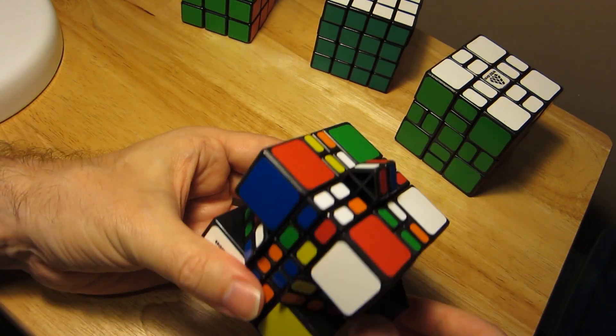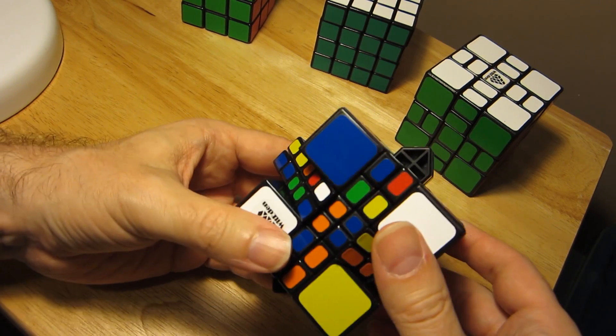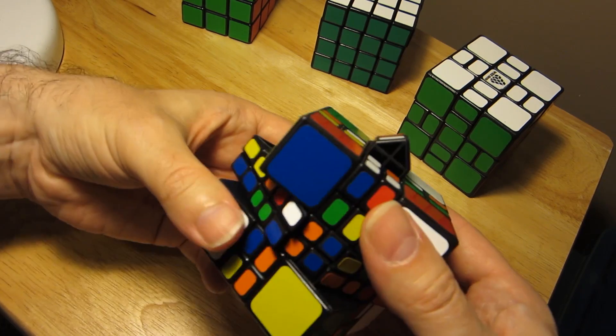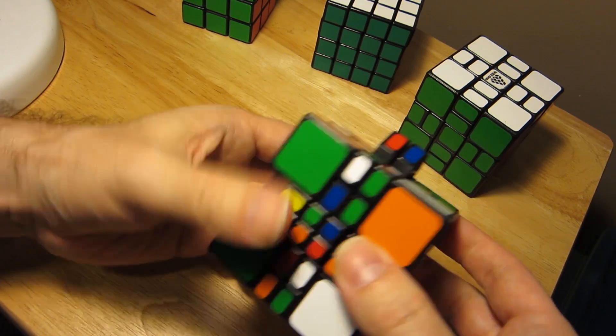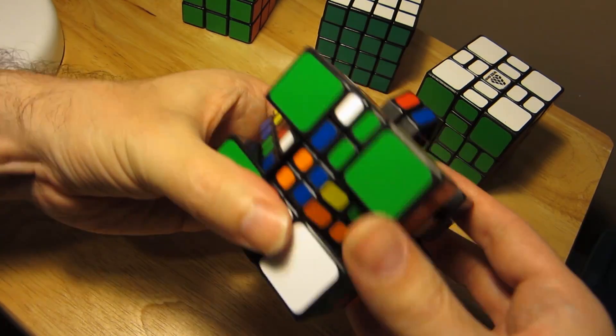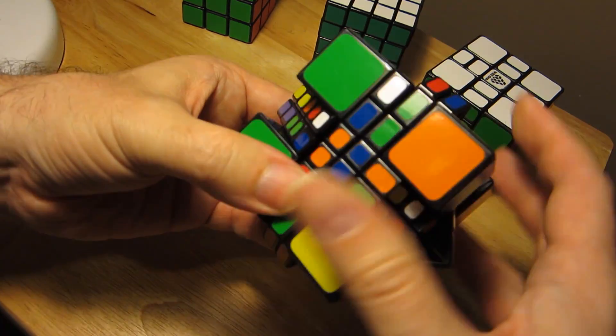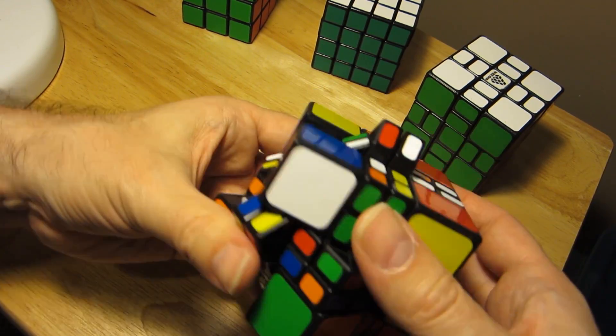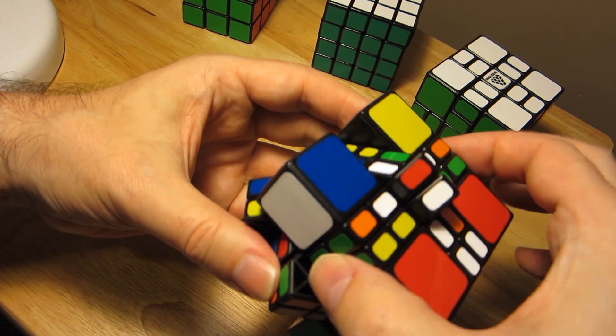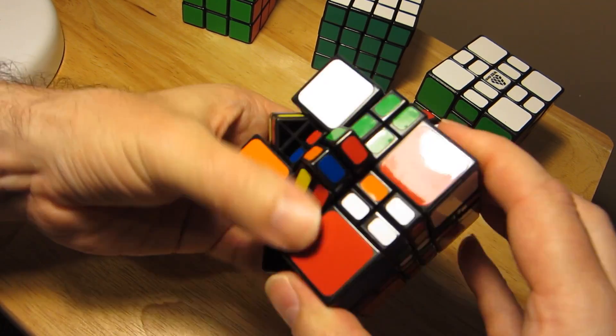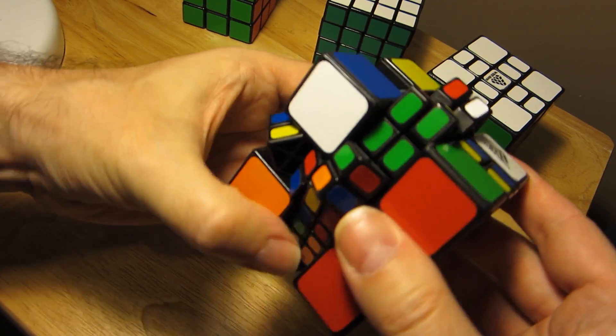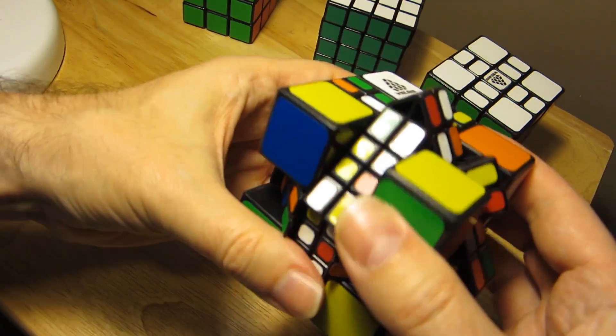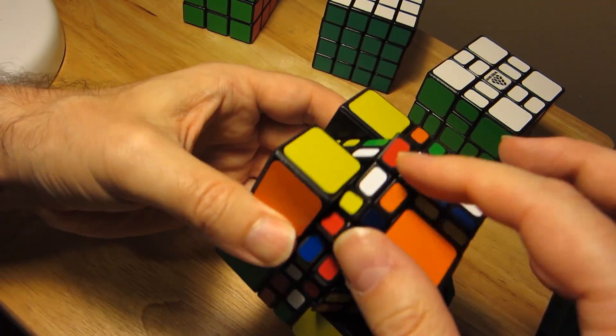I just dislodged an edge there, and we'll dislodge another edge. Now, if you want to make it a little easier for yourself as you're scrambling this, keep these layers together—it makes things a little easier. But if you're really up for a challenge, you really need to get the layers to separate.